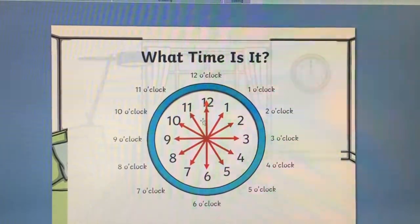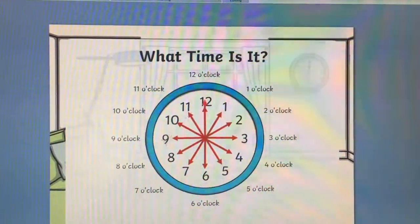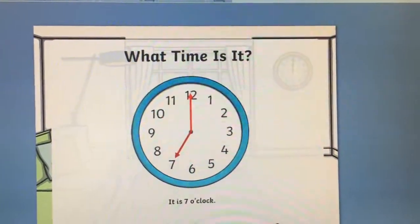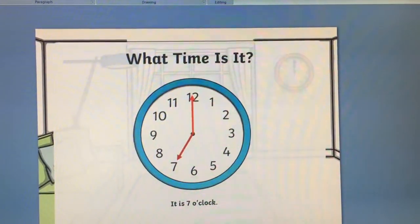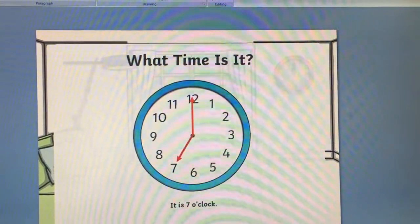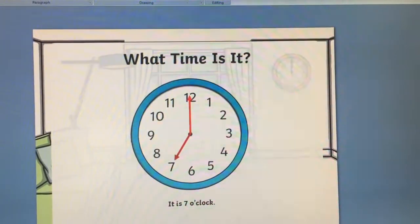Just look at one more. This one is 7. Can you see that the big hand is pointing to 12 and the small hand is pointing to 7?